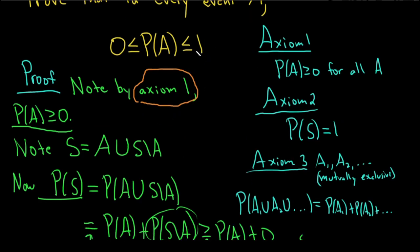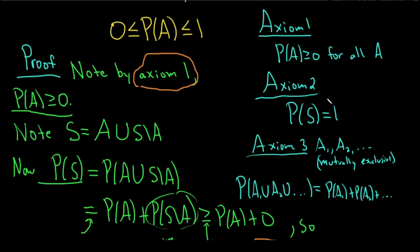And so you have to think, where does 1 come from? Well, where does it appear in the axioms? Well, it appears here, right? It appears in axiom 2. So it tells you to somehow involve S, right?